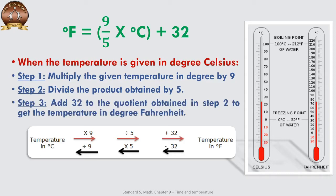To summarize: temperature in degrees Celsius, multiplied by 9, divided by 5, plus 32 gives temperature in degrees Fahrenheit. On the other hand, temperature in Fahrenheit minus 32, multiplied by 5, then divided by 9 gives temperature in degrees Celsius.